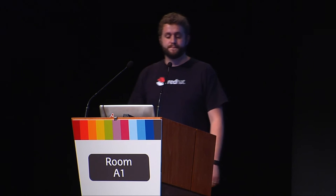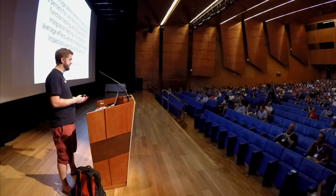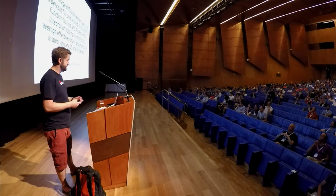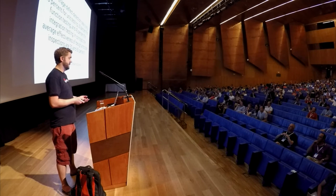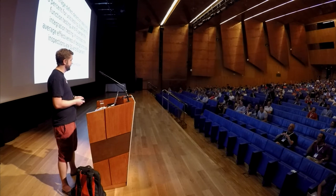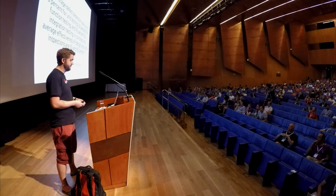This is a quote from a book called Code Complete by Steve McConnell. He says that the average detection rate for unit tests is 25%, 35% for function tests, 45% for integration tests. In contrast, the average effectiveness of design and code inspections is 55% and 60%. He's basically claiming that Code Review is the most effective of all these approaches to improve your software. I'm not sure I completely buy these numbers, but even if it was on par with your testing, that's quite an impressive amount of benefit.